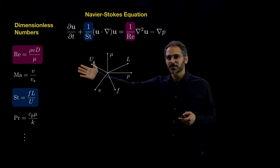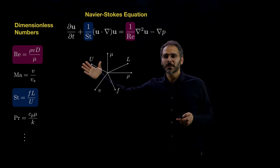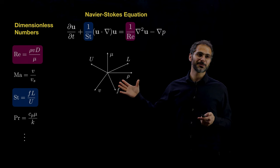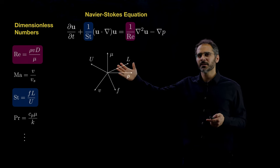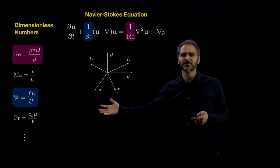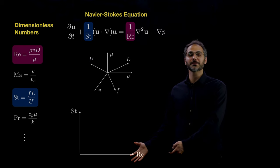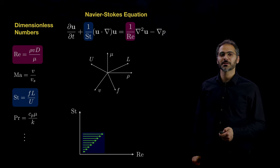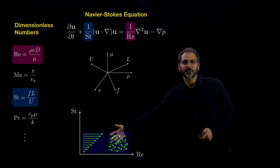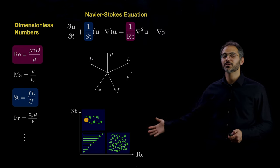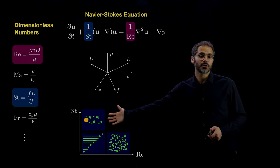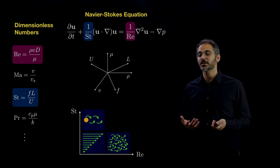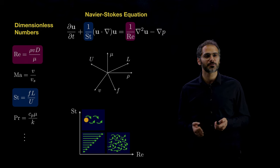Getting these dimensionless numbers is also a very important part of going from a very high-dimensional parameter space — like having mu, L, rho, F, and V — to a lower-dimensional space. In the Navier-Stokes equation, you just get Strouhal and the Reynolds number. We know that for low Reynolds number we have laminar flow, for higher Reynolds number we have turbulence, and for higher Strouhal number we can look at frequencies that quantify oscillations in the fluid.